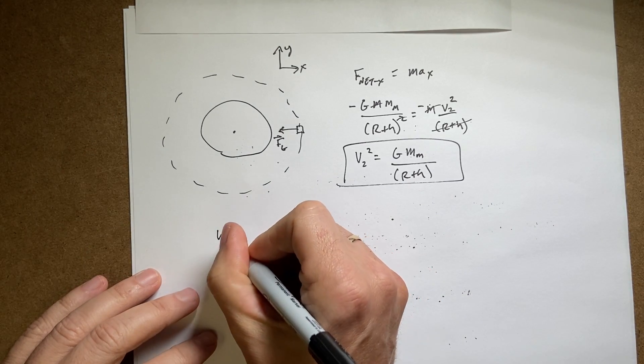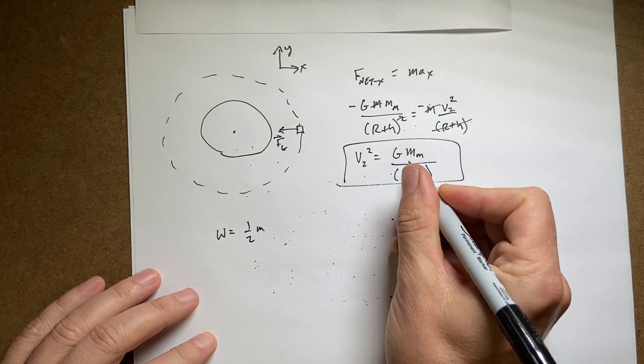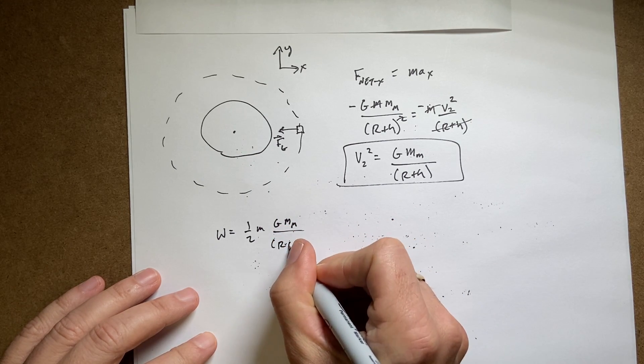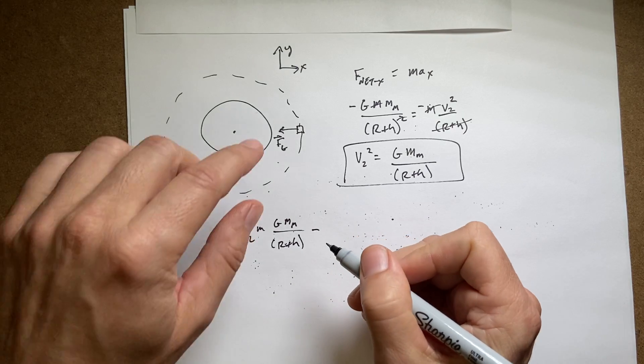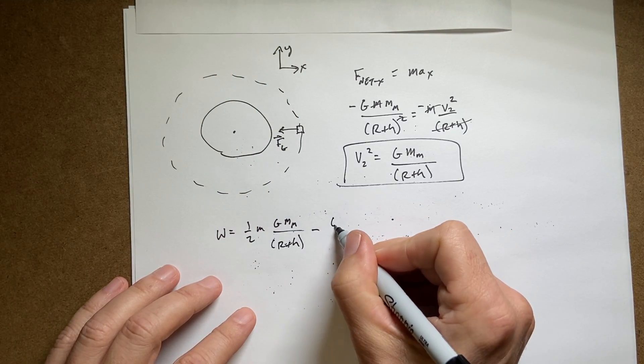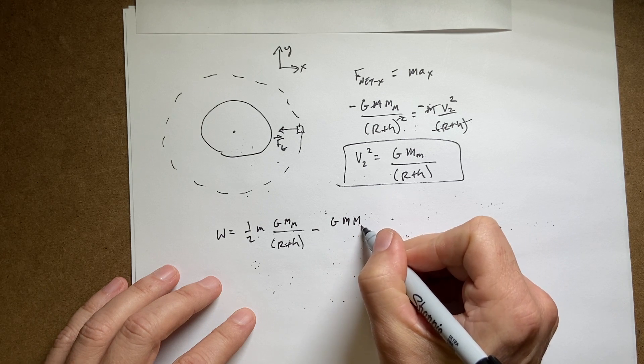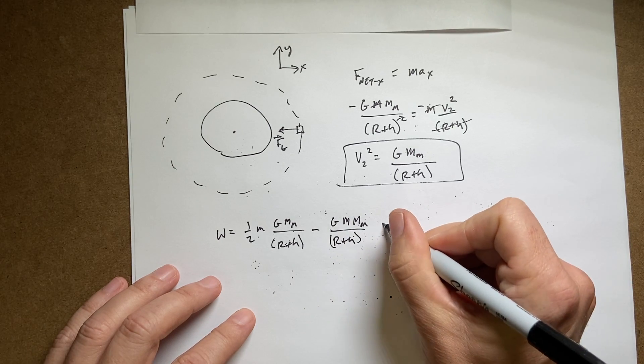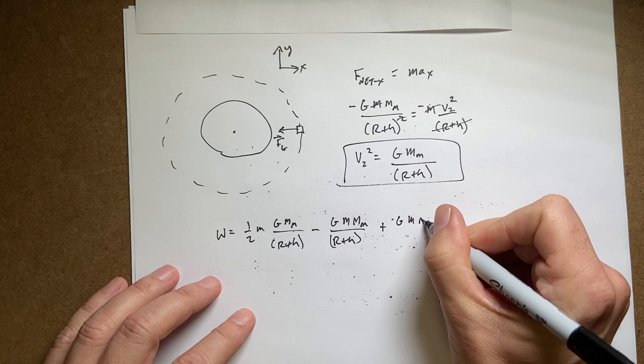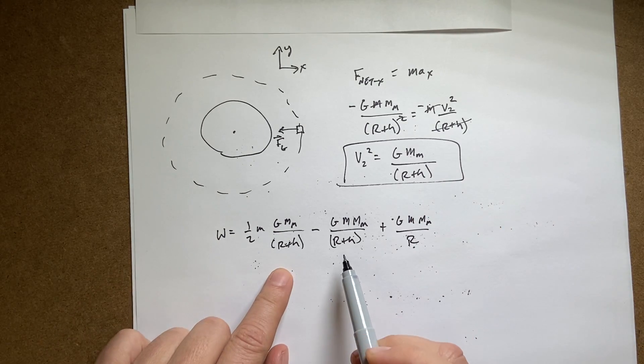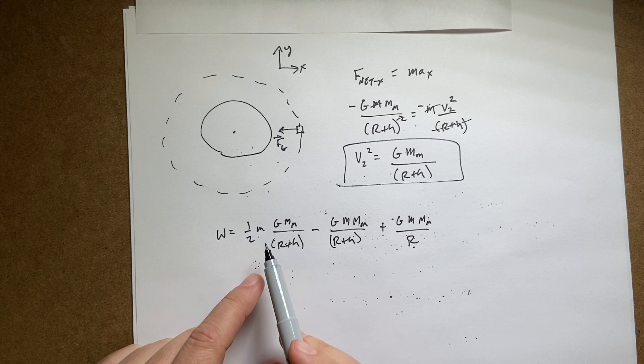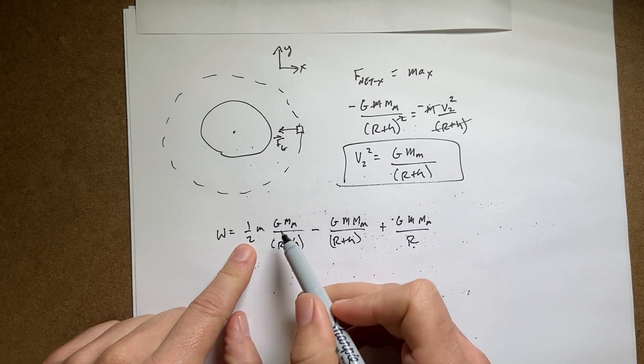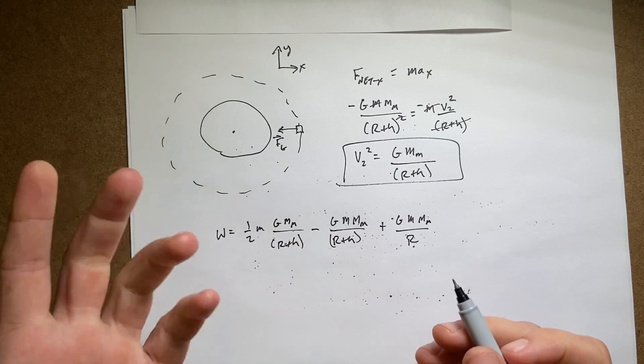So let's put everything back in. So now I get work is one half m times v2 squared, which is g mass of the moon over r plus h. And then I get minus the final potential, which is g mass of the moon over r plus h. And then I have the initial potential, which is plus g mass of the moon over r. Now, you see, I actually saved myself from work here because I have this term and I have this term. And the only difference is one half. So this is like minus one and that's a half. So if I add these two together, I get minus a half times that.